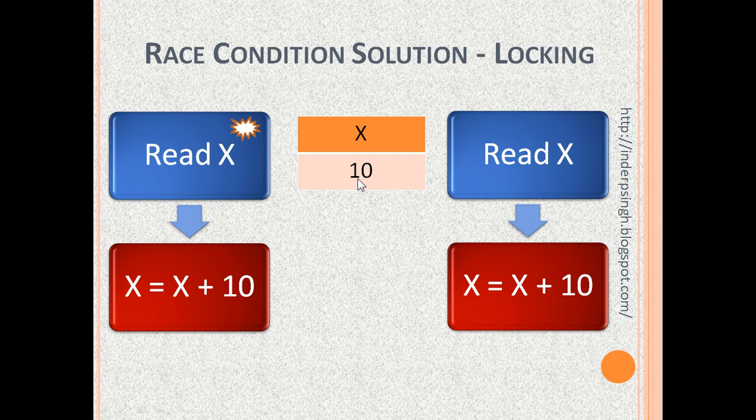Now, x is locked in the critical section, meaning no other process can read x or modify x. So, the next statement has to be executed. x becomes 20. Now, the critical section of the process is complete and the lock on x is released.